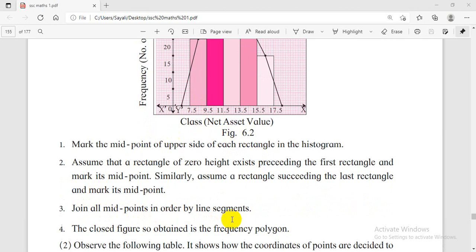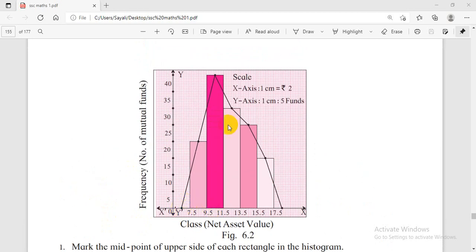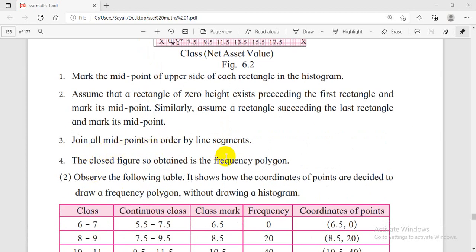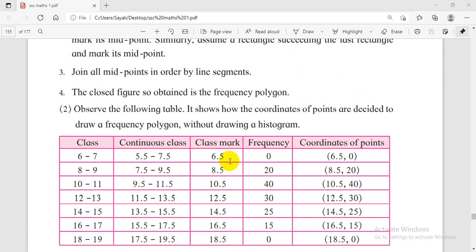Join all the midpoints in order by line segments. You have to join the midpoint of the first class interval to the midpoint of the next class interval, continuing in order. The last midpoint joins to the zero-height class interval midpoint that you assumed. This closed figure is the frequency polygon.